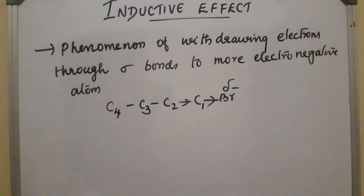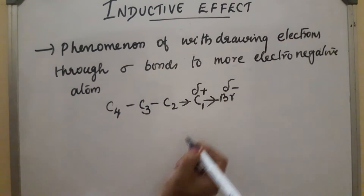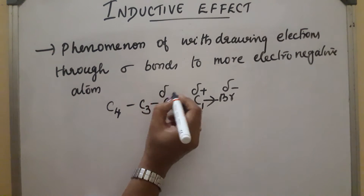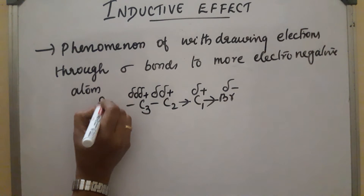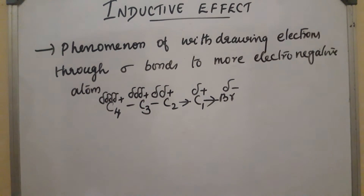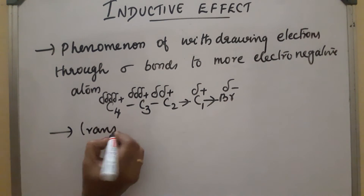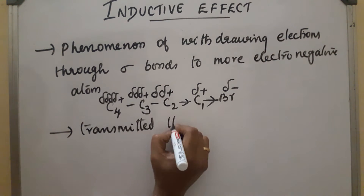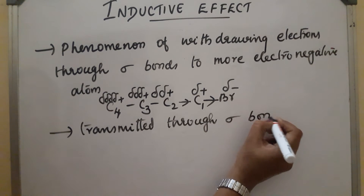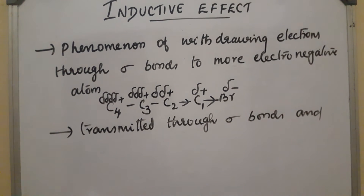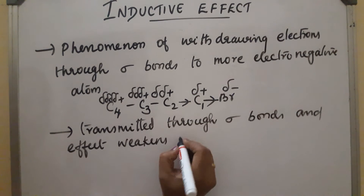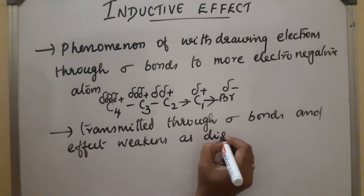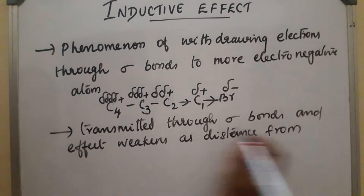The compound is polarized: bromine gets a partial negative charge and C1 gets a partial positive charge. The polarization decreases as the distance from the bromine atom increases. This effect is transmitted through sigma bonds and weakens as the distance from the electronegative atom increases.